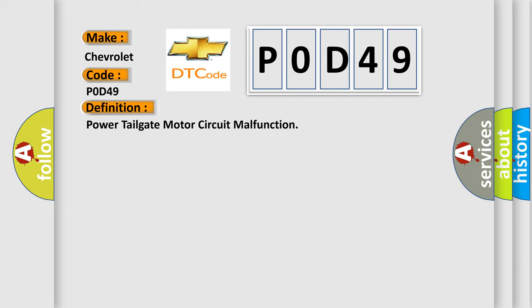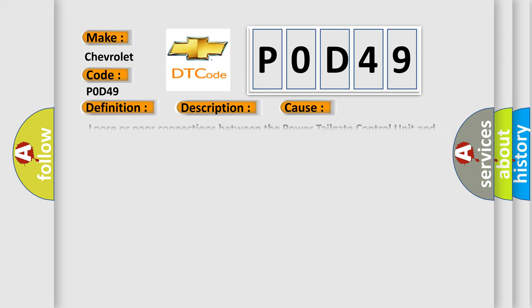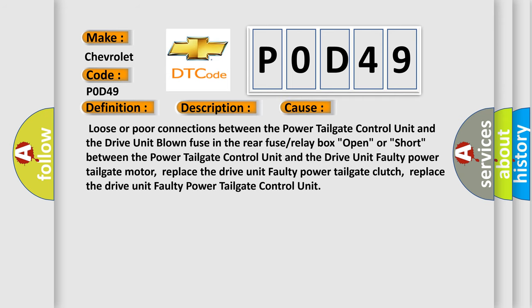The basic definition is: Power tailgate motor circuit malfunction. Here is a short description of this DTC code. Poor communication between the power tailgate control unit and the drive unit. This diagnostic error occurs most often in these cases: loose or poor connections between the power tailgate control unit and the drive unit, a blown fuse in the rear fuse or relay box, an open or short circuit between the power tailgate control unit and the drive unit, or a faulty unit.